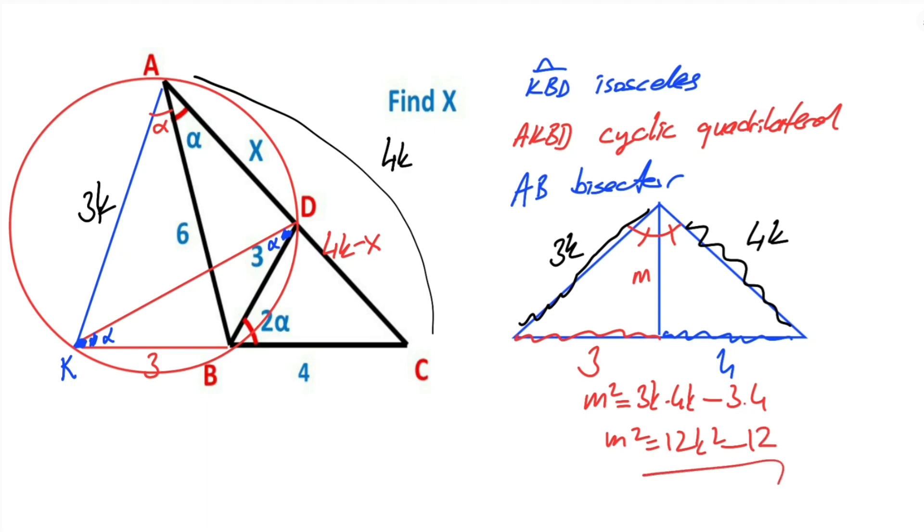And then if we apply this formula to the question, 6 squared equals 3k times 4k minus 3 times 4. Therefore 36 equals 12k squared minus 12, so 48 equals 12k squared. That means k squared equals 4, so k equals 2 units.